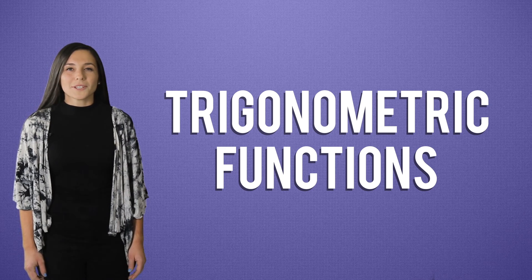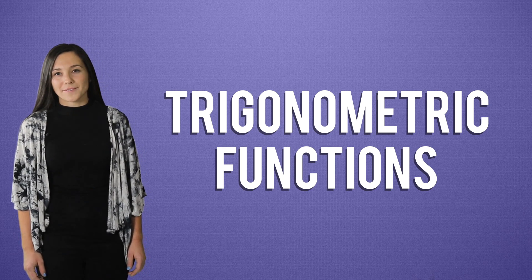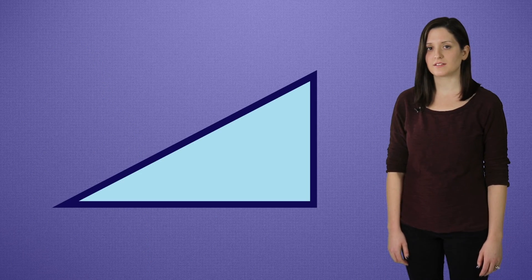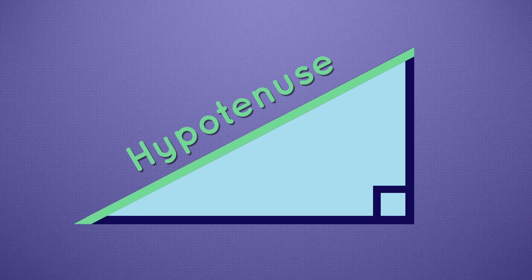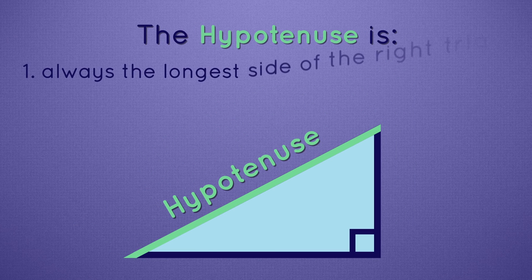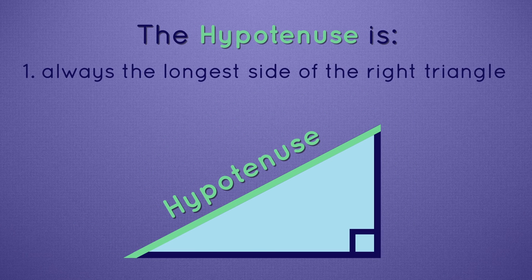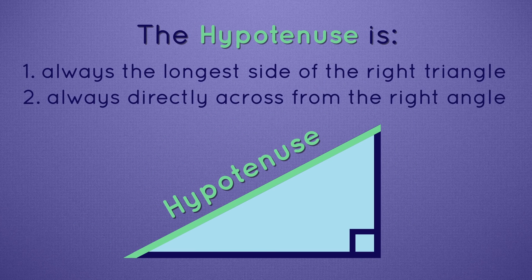But first, we'll need to learn our way around a right triangle. A right triangle has three sides, and each of those sides can be named. The first is the side across from the right angle — that's the hypotenuse. The hypotenuse is always the longest side of the right triangle and is always across from the right angle.